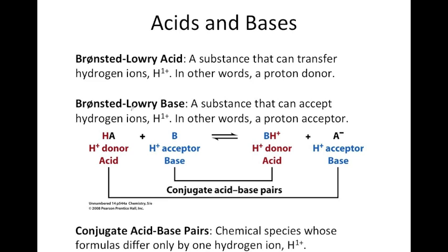Let's look at this hypothetical example. Let's say we have an acid HA plus some base B. According to the Bronsted-Lowry definition, if this is an acid it will donate a proton to the base, and the Bronsted-Lowry base will accept a proton. So these must occur in pairs — in order to have a Bronsted-Lowry acid you must have a Bronsted-Lowry base. So here we have our proton donor, the acid, and our base would be our proton acceptor.